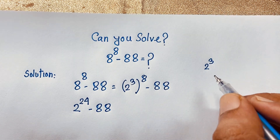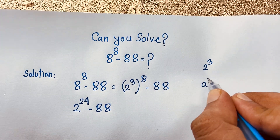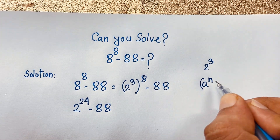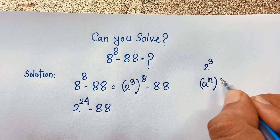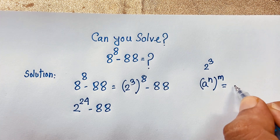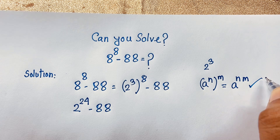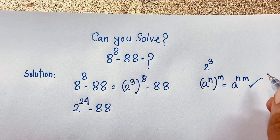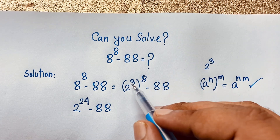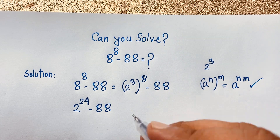We know that the exponential formula: a to the power n, bracket power is m, it will be a to the power n times m. According to this formula I can say 3 times 8 it will be 24.